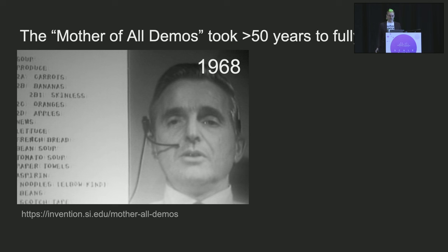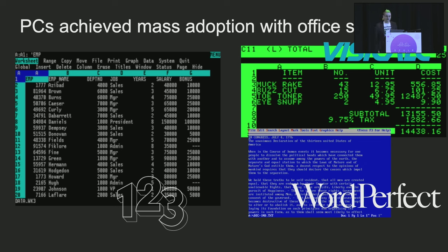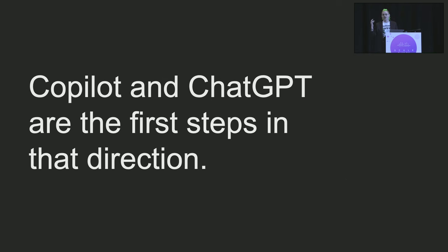Another famous demo is the Mother of All Demos, which in 1968 showed two people collaborating using computers — both pointing to the same file, interacting and editing at the same time, seeing each other's faces, speaking and collaboratively editing. It's 2023 and this kind of works in Visual Studio Code Live Share, about 50 years later. That demo inspired work for the last 50 years. What actually made computers usable on a shorter timescale was office software: VisiCalc, Lotus 1-2-3, WordPerfect. These caused mass adoption once people could make themselves more productive. With Copilot and ChatGPT, perhaps we're starting to see the first steps in that direction.